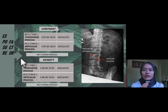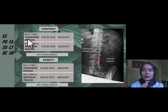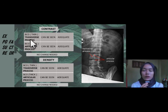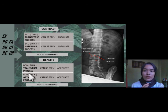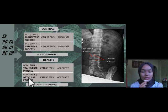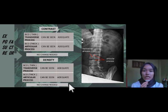For exposure factors, the contrast used is adequate. This is because the bony cortical outline of the thin structure — the transverse process — can be seen, and the bony cortical outline of the thick structure — the articular process — can also be seen. For density, it is also adequate, as the bony trabecular pattern of both the transverse process and the articular process can be seen. No change is needed for the exposure factors.